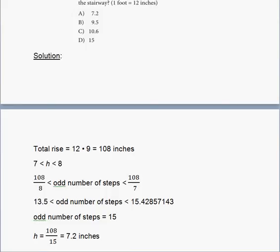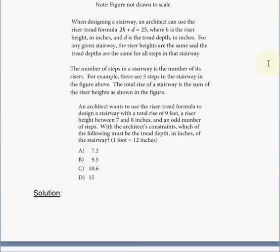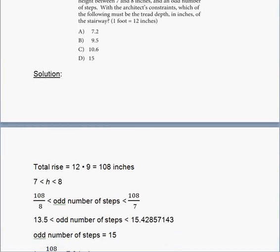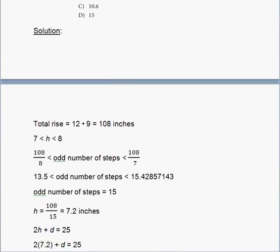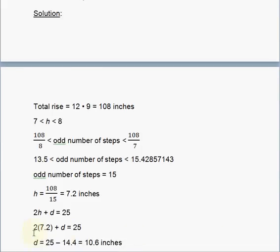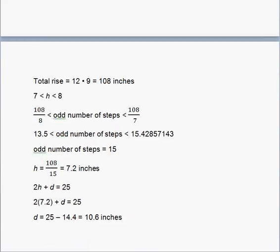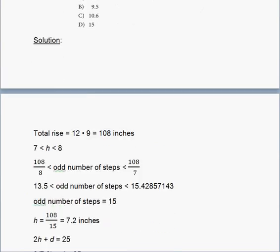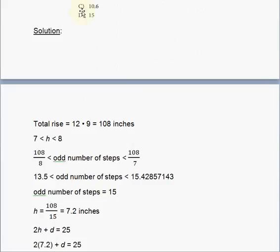Let's plug it in. We get 2 times 7.2 plus D equals 25, because we know the H now, and we solve for D. So D equals 25 minus twice 7.2, and 7.2 times 2 is 14.4. So 25 minus 14.4 gives you the value of D, which is 10.6 inches. Bingo! We just solved it. And that's answer choice C. 10.6.